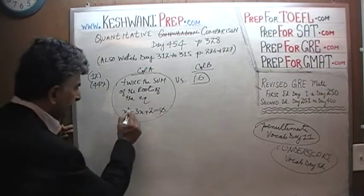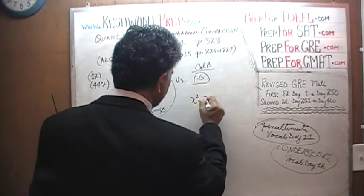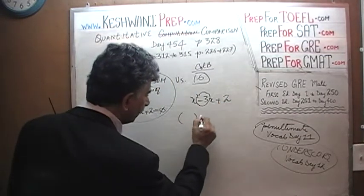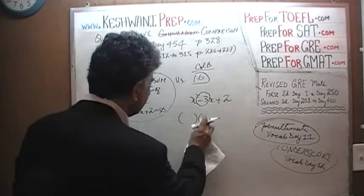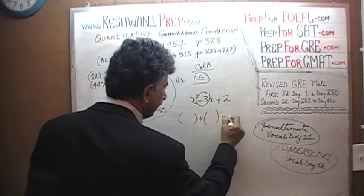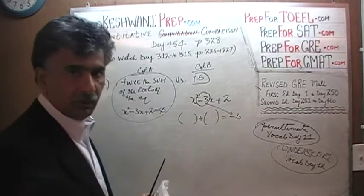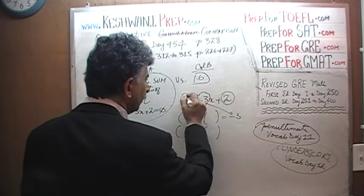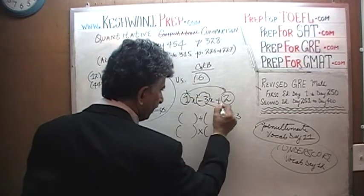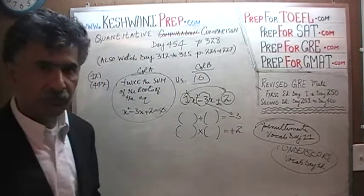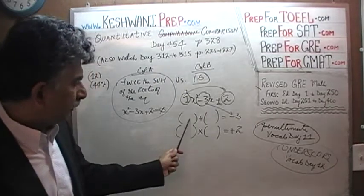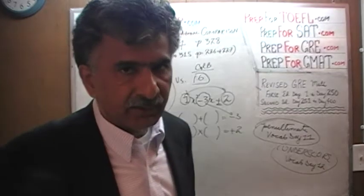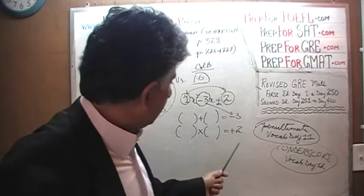In factorization, for x squared minus 3x plus 2, we are looking for two numbers whose sum equals negative 3 — that negative 3 comes from the coefficient of x — and whose product equals 1 times 2, which is positive 2. So we need two numbers whose product is positive 2 and whose sum is negative 3.